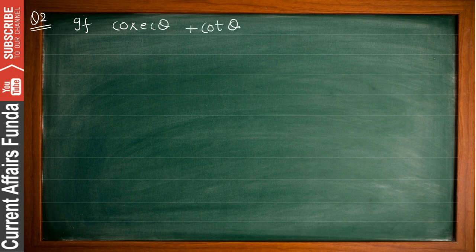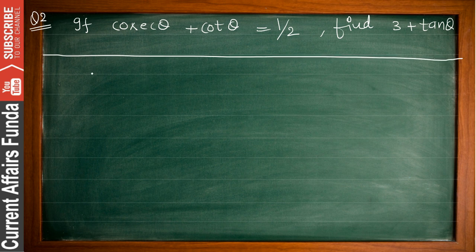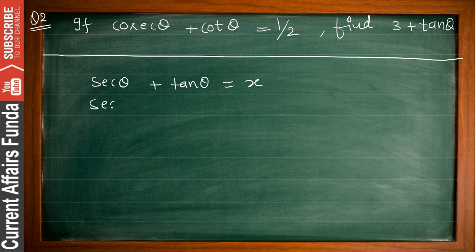Now friends, question number 2: if cosec θ + cot θ = 1/2, then you need to find the value of 3 + tan θ. We have already told you about these kinds of equations. If sec θ + tan θ = x, then sec θ − tan θ = 1/x. This works vice versa as well.